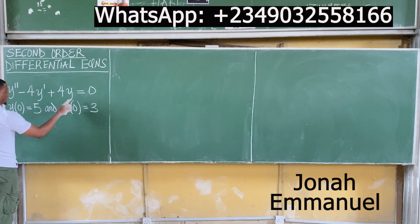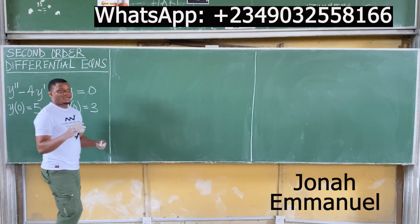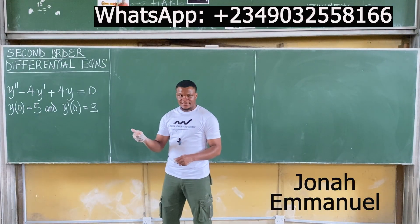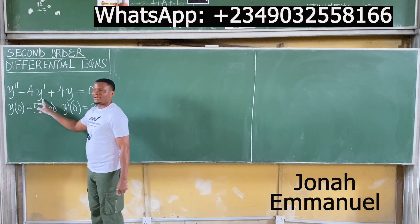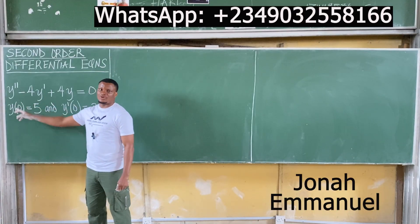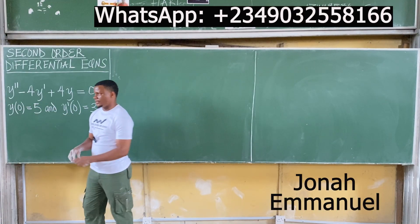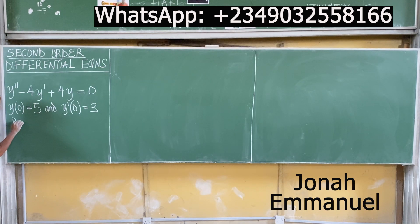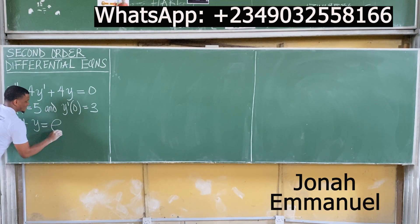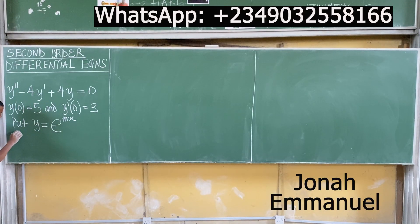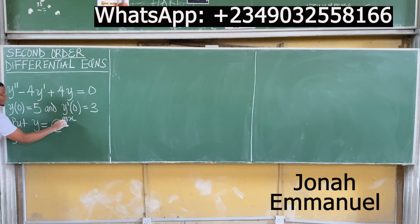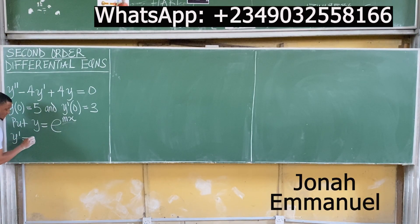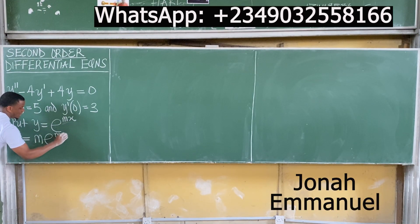First things first: we are taking y prime to be dy/dx, and y double prime to be d²y/dx². My first task is to put y equal to exponential mx. Let's differentiate this — y prime, the first derivative of e^(mx): differentiate the power mx to get m, then multiply, so it becomes m·e^(mx).